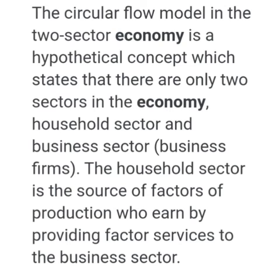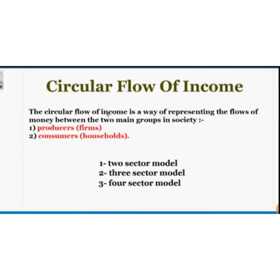In general, the Circular Flow of Income is a way of representing the flows of money between the two main groups in society. Which are the two groups? Producers and the consumers — that is, producers, here known as firms, and consumers known as households.